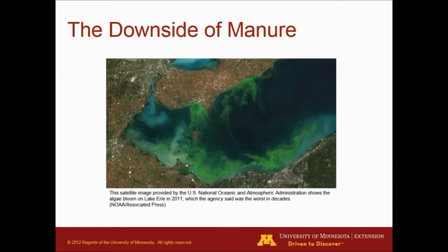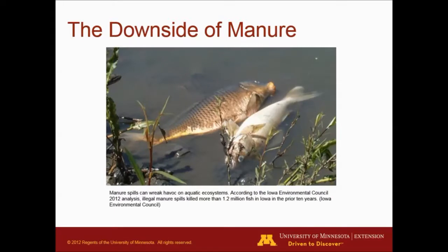In this particular example, this is a satellite image of Lake Erie, and we can clearly see the algae bloom issues they were having in 2011. Also, manure can be blamed for some fish kills. This is an example from the Iowa Environmental Council, where they did an analysis and attributed manure spills to about 1.2 million fish kills in Iowa over the previous years.